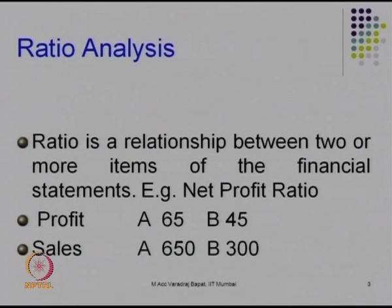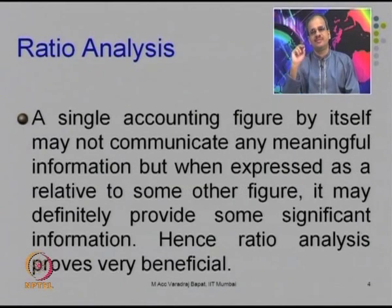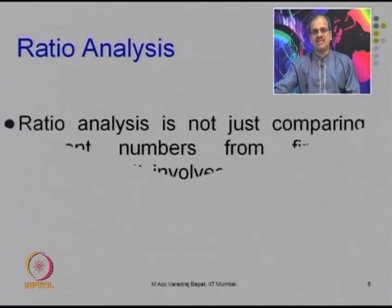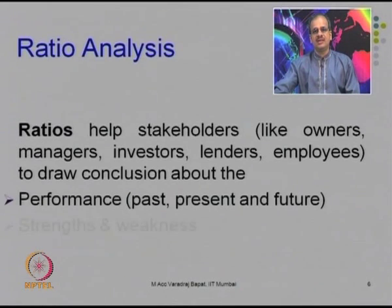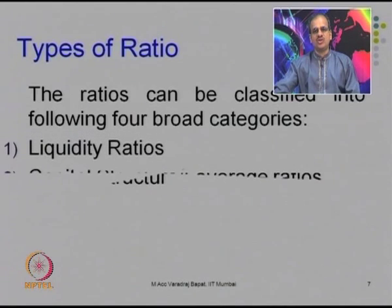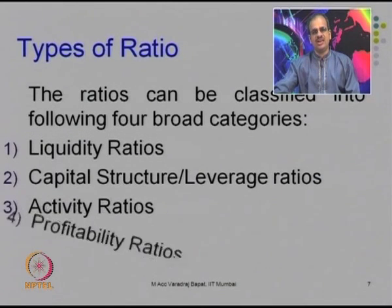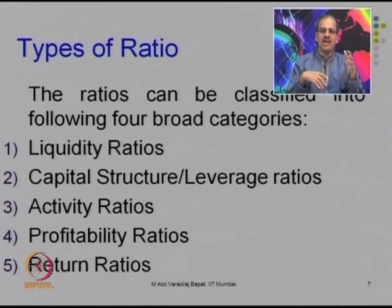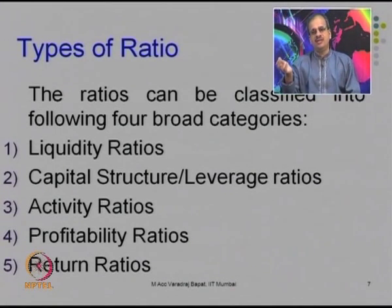As we saw last time, a ratio is essentially a relationship between two items — for example, profits and sales. To calculate net profit ratio, we find the relationship between these two items. There are a variety of ratios, but the important ones are: liquidity ratios, capital structure ratios, activity ratios, profitability ratios, and return ratios.